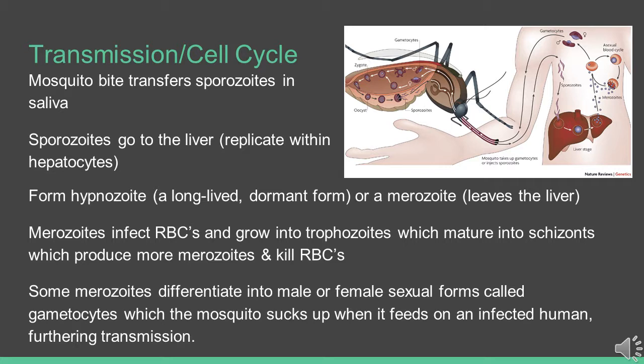Merozoites infect red blood cells and grow into trophozoites, which mature into schizonts, which produce more merozoites and kill the red blood cell. Some merozoites differentiate into male or female sexual forms called gametocytes. When a mosquito bites the host human, these gametocytes enter the mosquito and infect it, furthering the transmission of the disease.